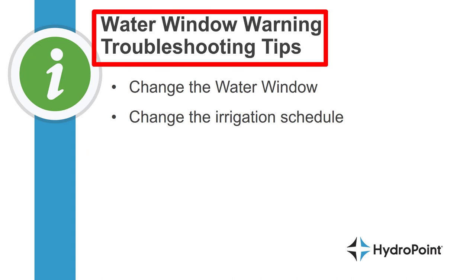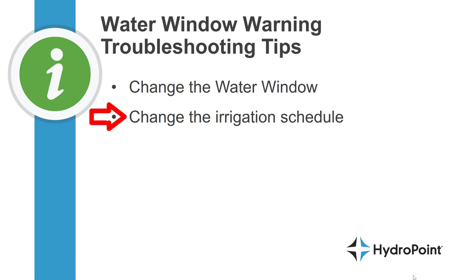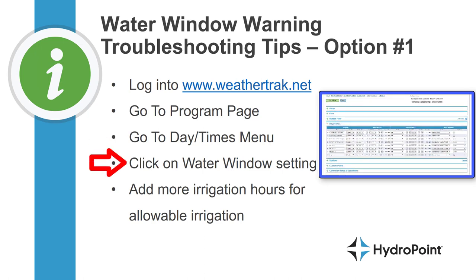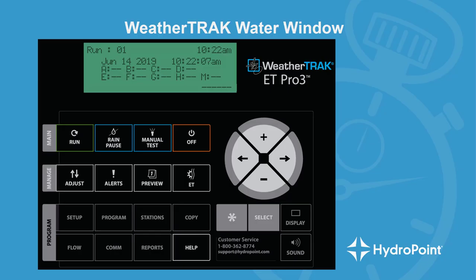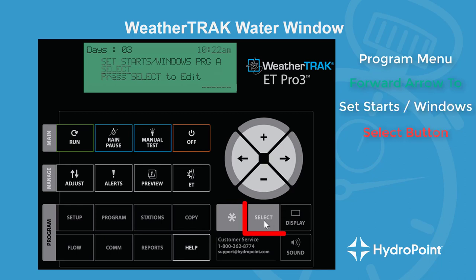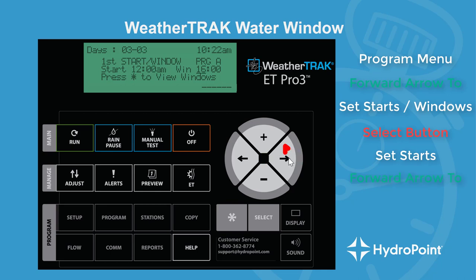To resolve a water window warning, we have to make the irrigation schedule fit into the allowable water window. To troubleshoot, we need to either change the water window or change the irrigation schedule. As demonstrated, that can be done at weathertrack.net by going to the Program page and the Days and Times menu, clicking on the water window setting, and adding enough hours to allow for all of the necessary irrigation. Or you can change it at the controller by going to your Program or Days and Times menu, scrolling through the menu options until you get to Starts and Windows, hitting Select to bring up the start time and water window, editing the start time, advancing to the water window, and adding enough hours to allow for the entire irrigation schedule.